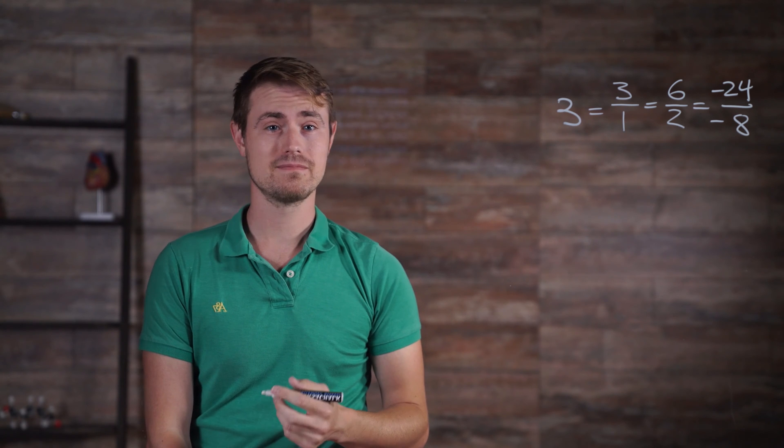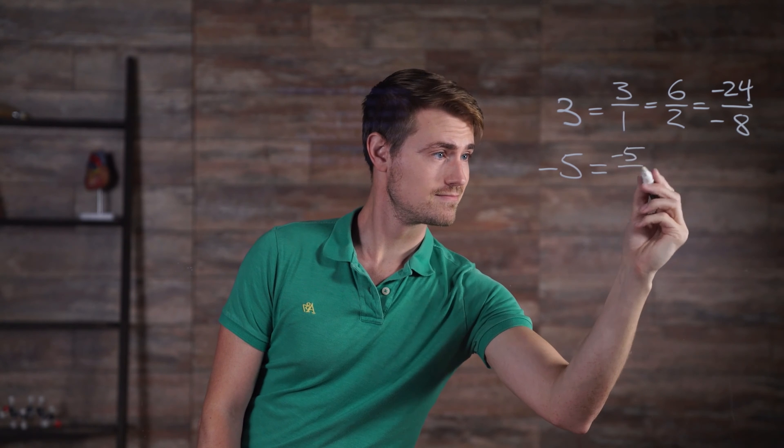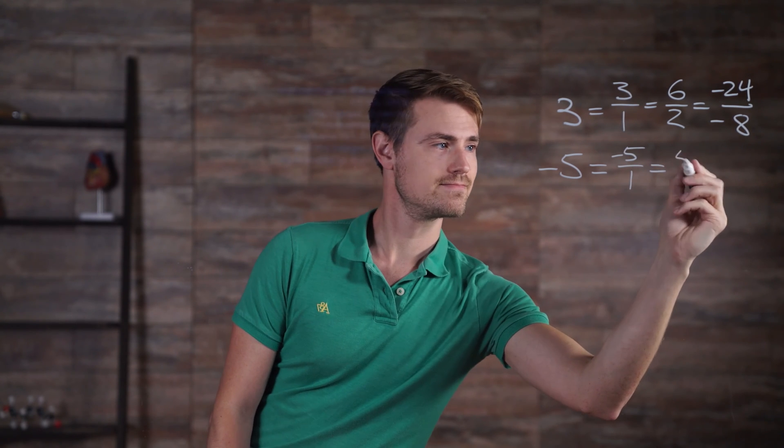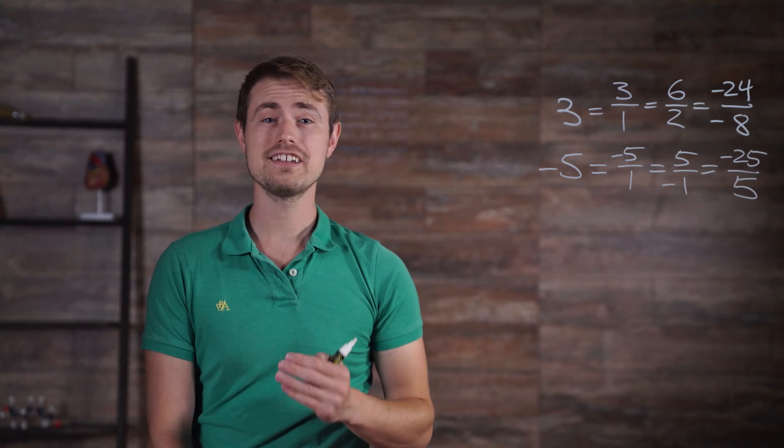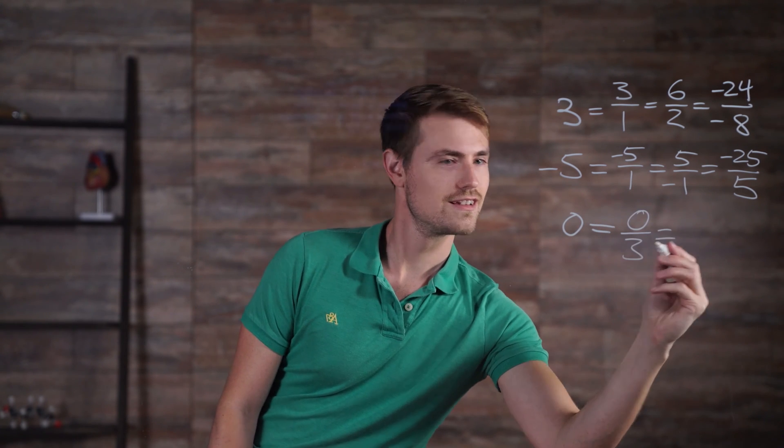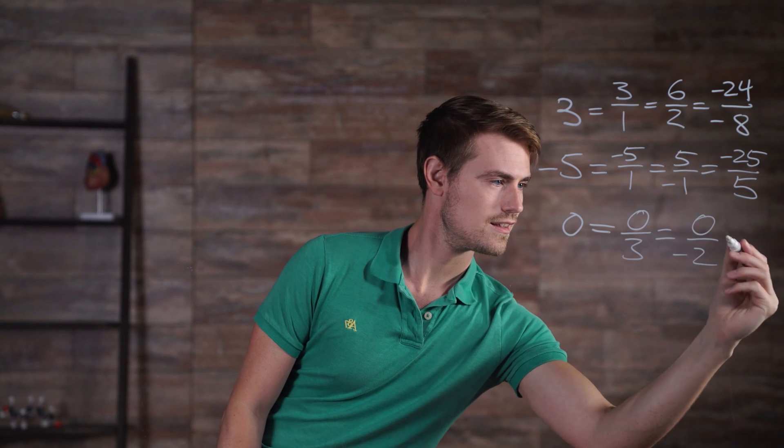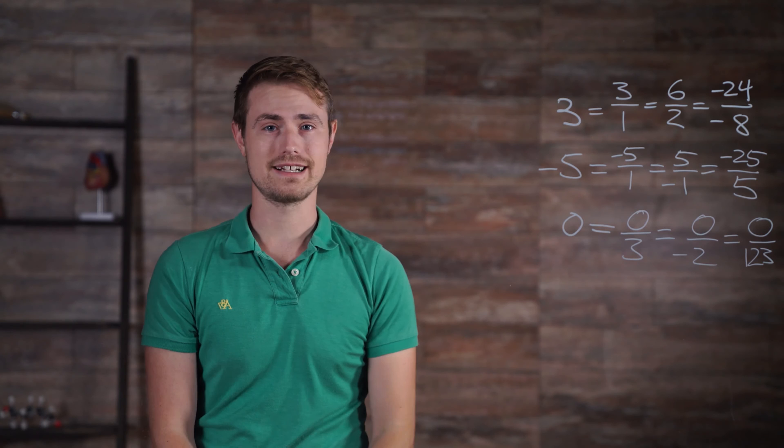The integer negative 5 can be represented as the following fractions, and the integer 0 can be represented as these fractions. As a side note, these are not the only fractions that result in these integers. They're just a few of the many examples that exist.